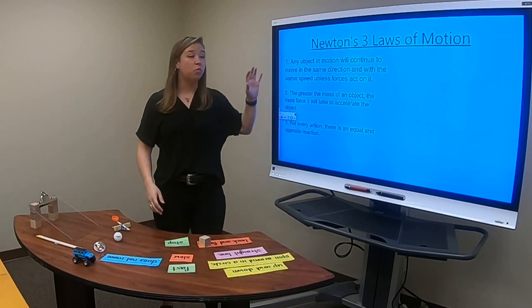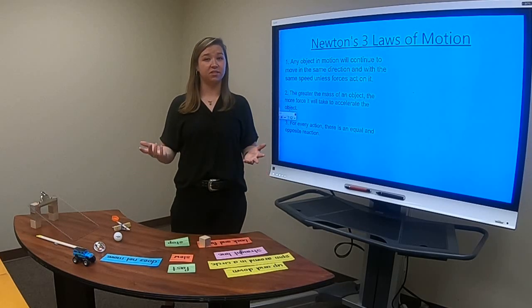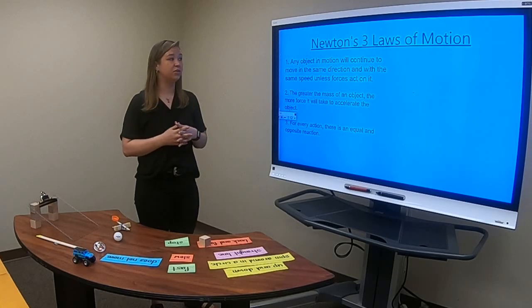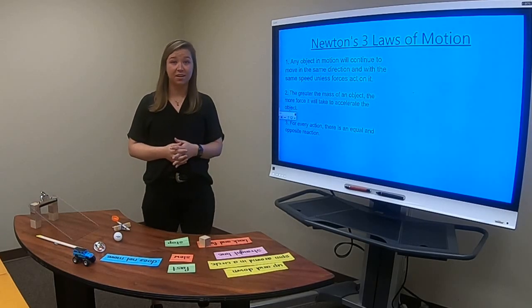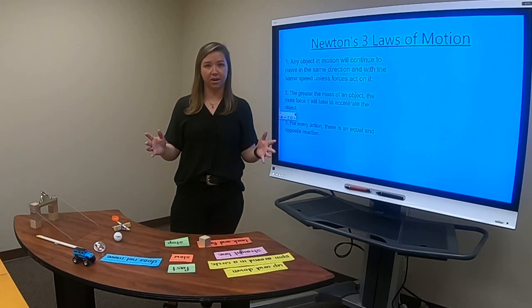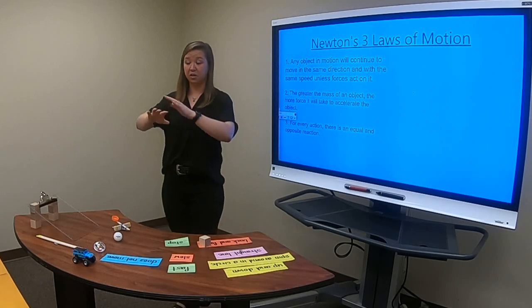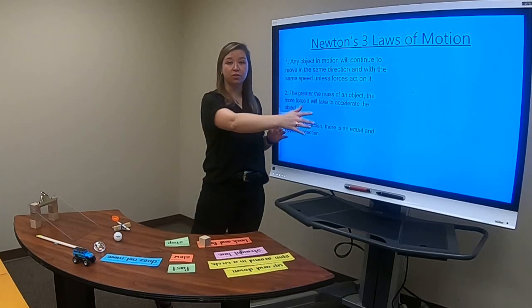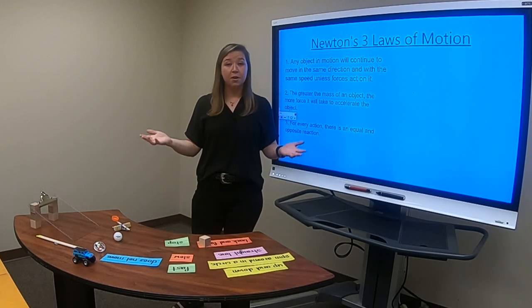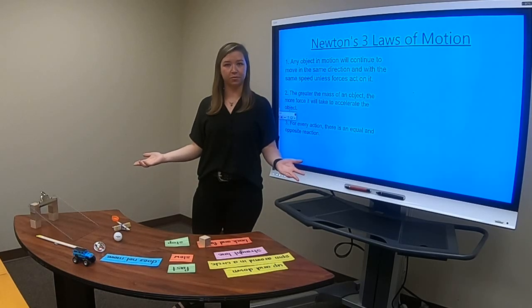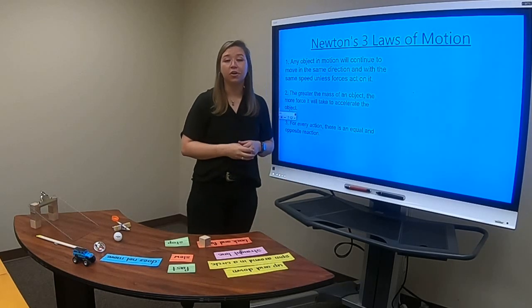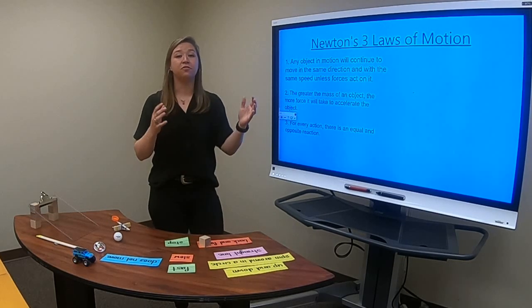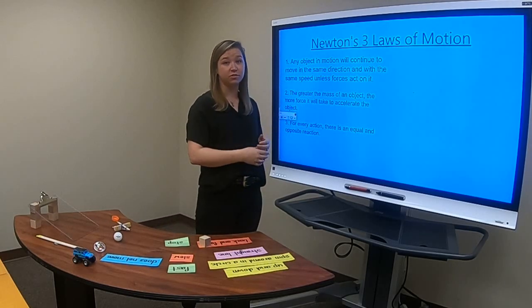So what you might not have known is what we just talked about are actually these laws of motion that Sir Isaac Newton made. So the first one says any object in motion will continue to move in the same direction with the same speed unless forces act on it. And I know that sounds super crazy, but if you were to kick a soccer ball outside in a wide open area, it would continue to go and go and go and go until another force acted on it. That sounds nuts to us, because every time we kick a ball, it always stops, right? Well, that's because on earth, we have the forces of gravity and friction. Gravity is pulling the ball back to the ground and friction is creating air resistance that eventually slows the ball down.